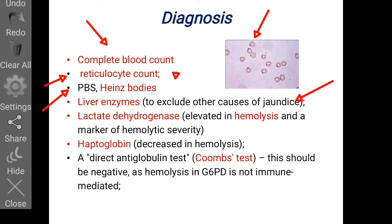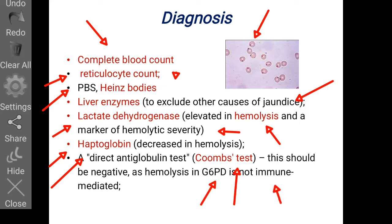Lactate dehydrogenase (LDH) is elevated in cases of hemolysis and serves as a marker of hemolytic severity. Haptoglobin will be reduced in G6PD deficiency or hemolysis. We should also perform a direct antiglobulin test (Coombs test), which should be negative, as hemolysis in G6PD deficiency is not immune-mediated.